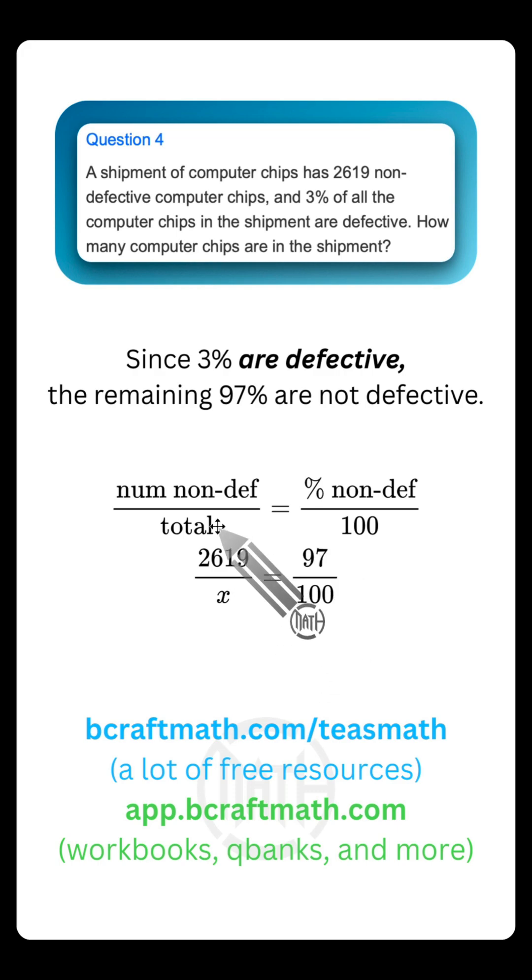And then we use this 3% that were defective to get the remaining 97% that are not defective. Notice the X is in our total, which is what we're trying to solve for. And with any proportion, if you cross multiply and divide, you will get 2700. Yes, that's a longer way, but the proportion is a very good approach.